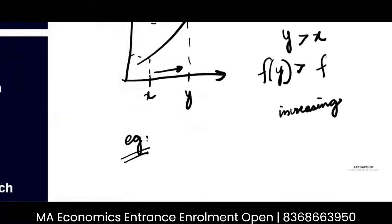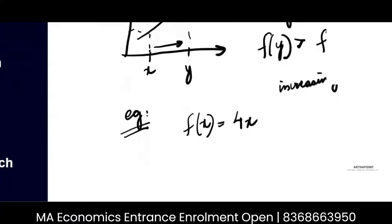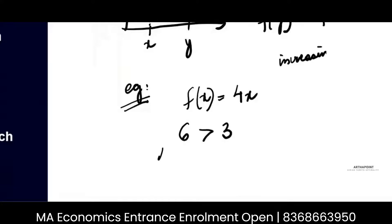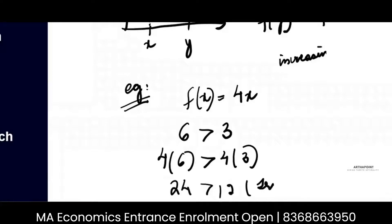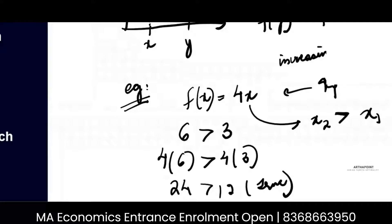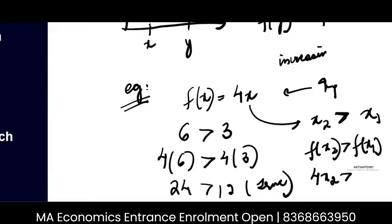Suppose the function I have is f(x) = 4x. I know that 6 is greater than 3. Then 4 times 6 is also greater than 4 times 3 — which means 24 is greater than 12. This is true. So this is an increasing function. If I put a value x2 and x1 where x2 is greater than x1, then f(x2) is also greater than f(x1), meaning 4x2 is greater than 4x1.